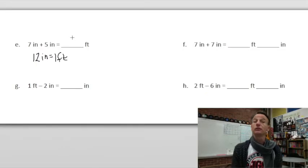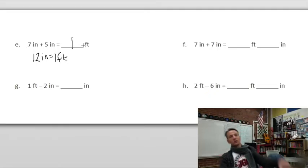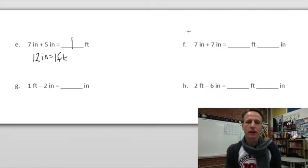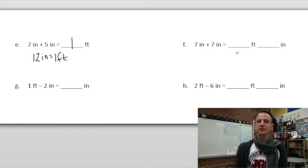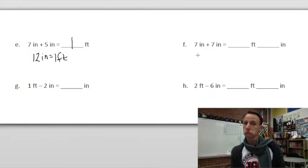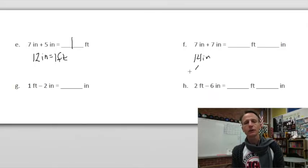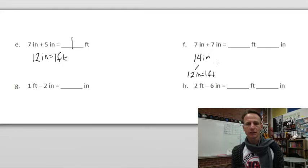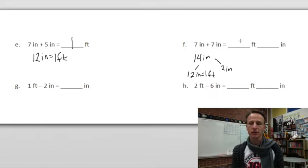Seven inches plus seven inches: seven and seven make 14 inches. When we look at this, 12 of those inches will be one foot, leaving two more inches. So we can write our answer as one foot two inches.